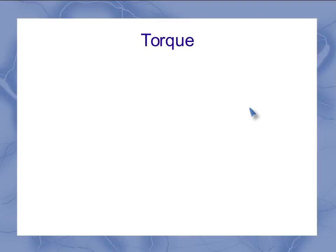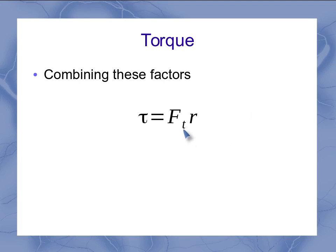Here's where we start defining our torque. So torque is a combination of the tangential force and the distance from the axis. Tau is the symbol we use for torque, and it's got a unit of Newton meters.